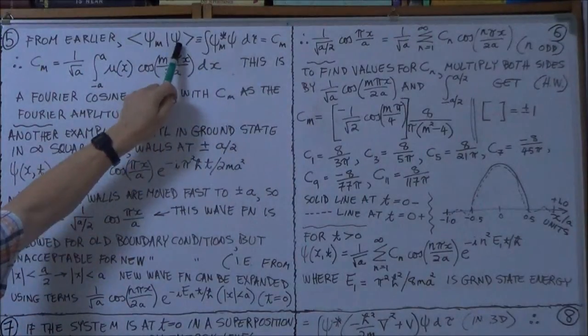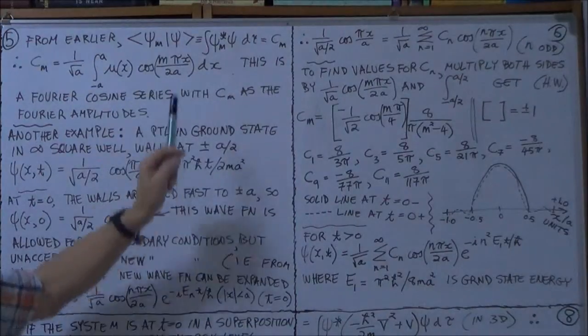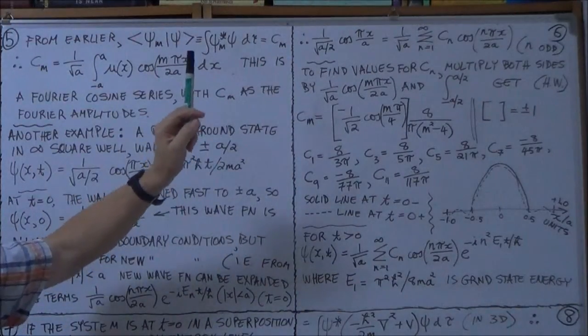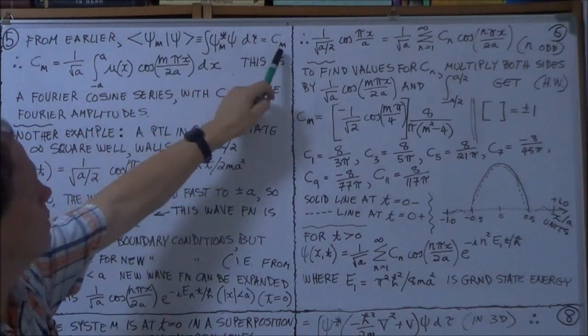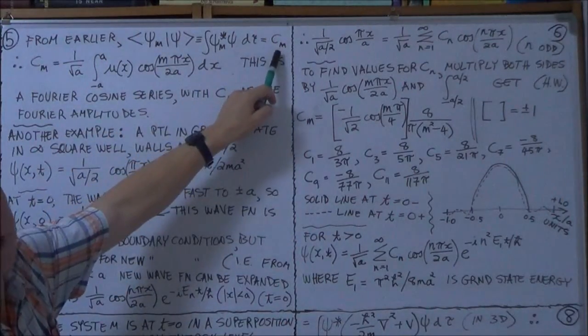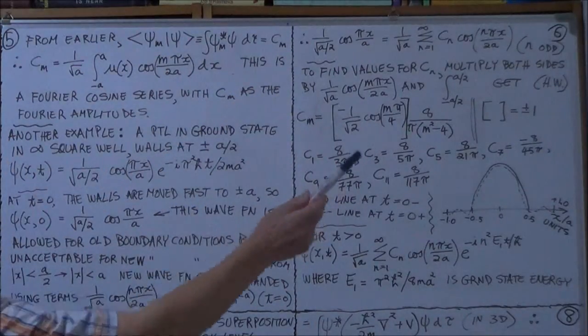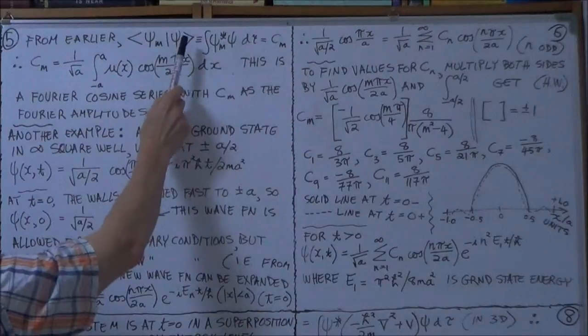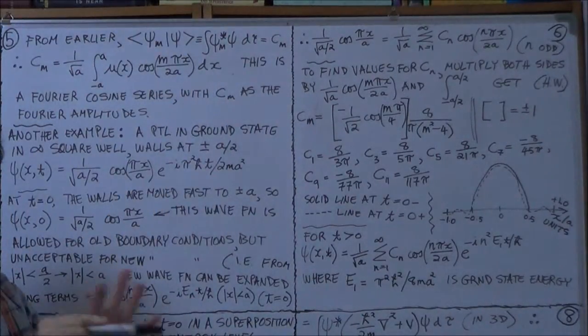Then, since this you can expand as sigma c_m psi m, then this just becomes this. We did this in an earlier session, just a few sessions back, alright? Now, in this case, psi, if we use the basis set of,